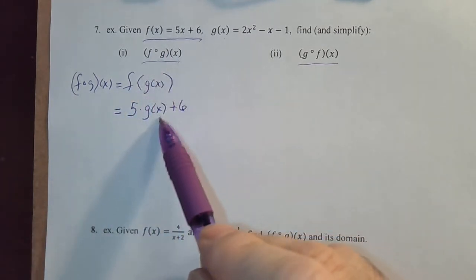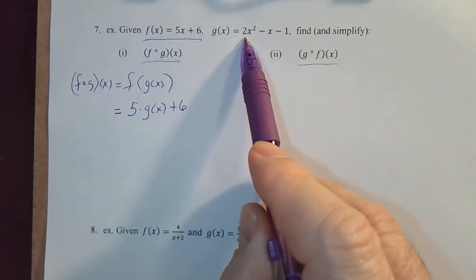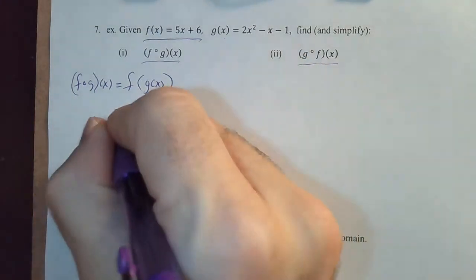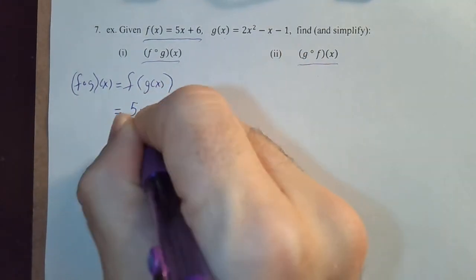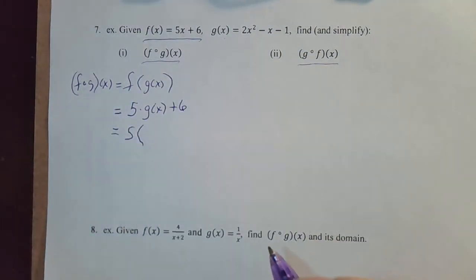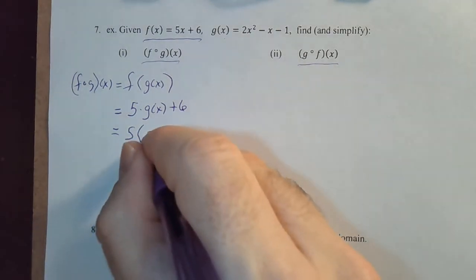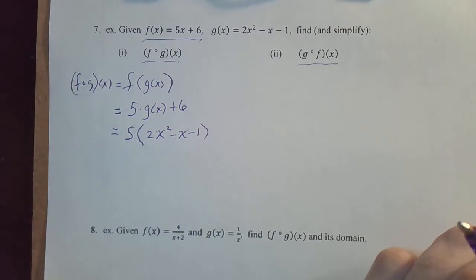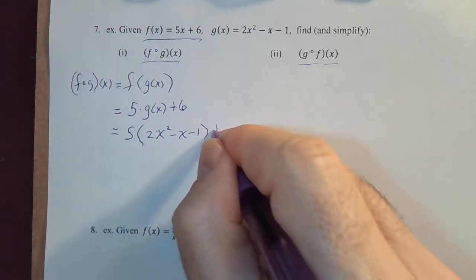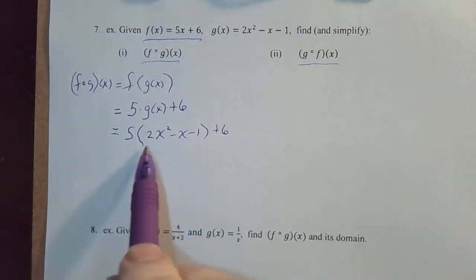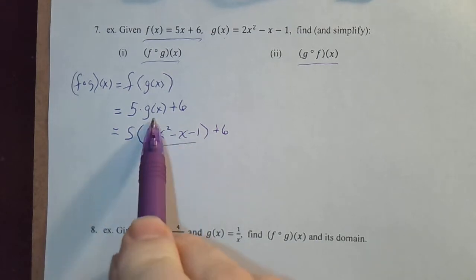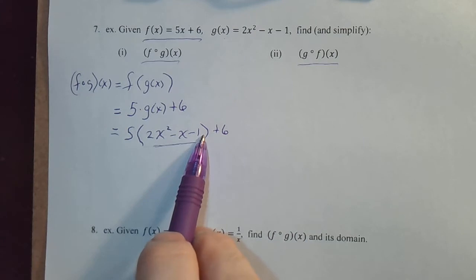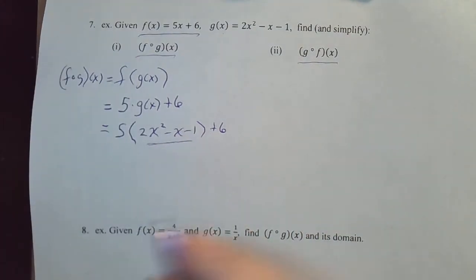And now, let's just substitute. What is g of x? g of x is 2x squared minus x minus 1. Let's replace that now. 5 times, you must put parentheses there, 2x squared minus x minus 1, and then we've got plus 6. So this part in parentheses is just g of x. We'll distribute the 5 through this parentheses, and we'll add 6 and we'll be done.